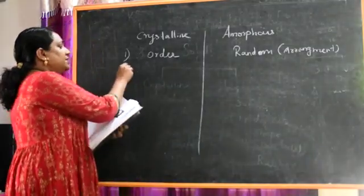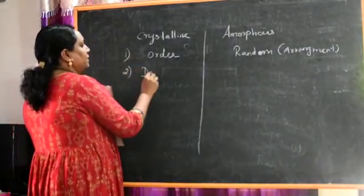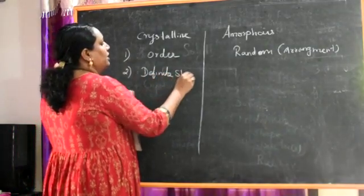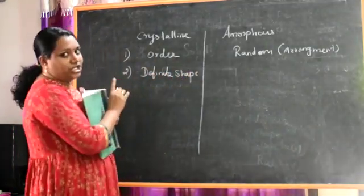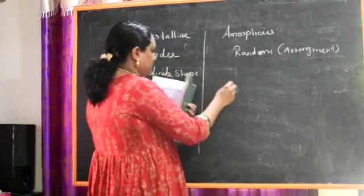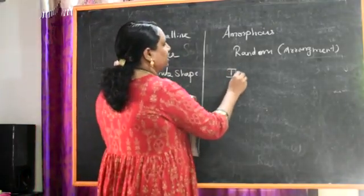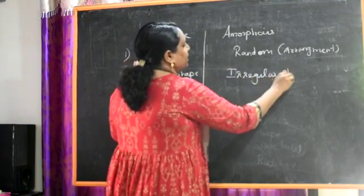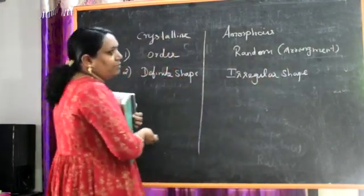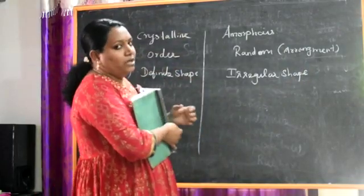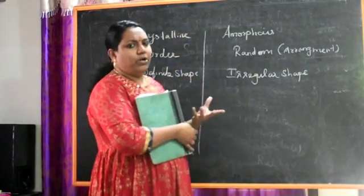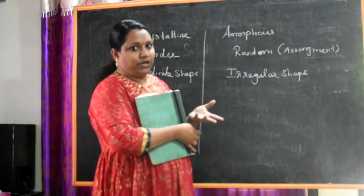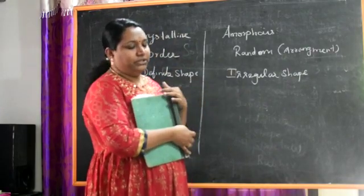The second difference: crystalline solids have a definite shape, while amorphous solids have no definite shape. For example, polymers — plastics — if we mix them, we can shape them into any form. So amorphous solids have no fixed shape.